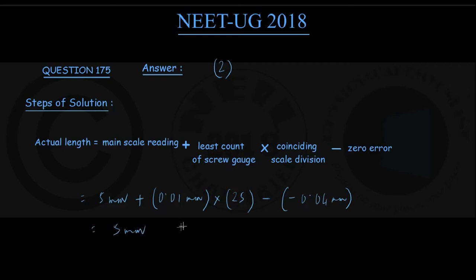Giving me 5 mm plus 0.25 mm, minus minus - be careful here - plus 0.04 mm, which gives 5 mm plus 0.25 mm plus 0.04 mm equals 5.29 mm. The options are given in cm unit, therefore converting, it comes out to be 0.529 cm.